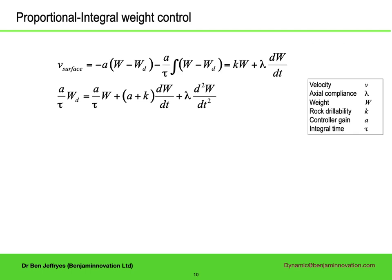Adding the integral term solves the problem. There are now two controller parameters, and as is conventional, I am writing the proportionality in front of the integral term as the proportional gain A, divided by a time tor. To get a differential equation, we need to differentiate, resulting in a second-order differential equation. If the system reaches equilibrium, then both the first and second derivative of weight with time are zero. The weight is the desired weight, so if it can reach equilibrium, then this will be at the desired weight.